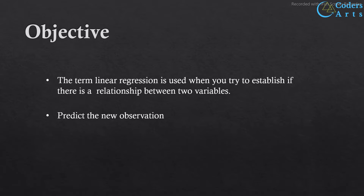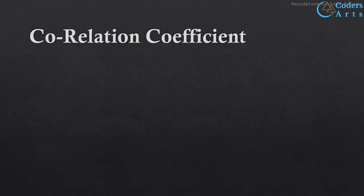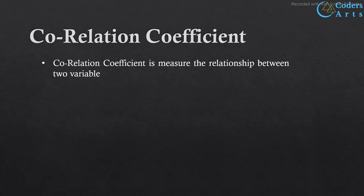There are two types of relationship: positive relationship and negative relationship. The correlation coefficient is the technique used to measure the relationship between two variables. The correlation coefficient cannot be higher than one or less than minus one. If the correlation coefficient of two variables is one, then this is a perfect positive linear relationship between the two variables.